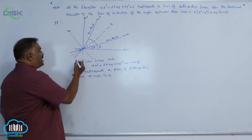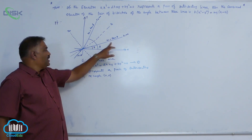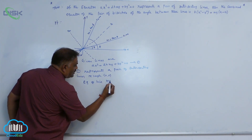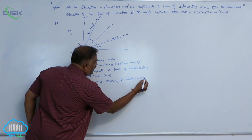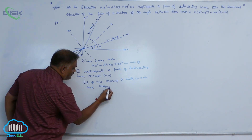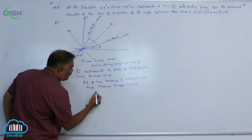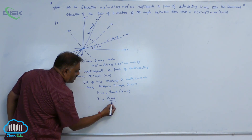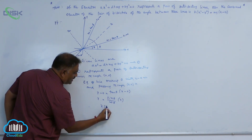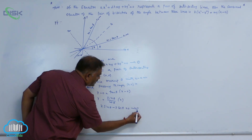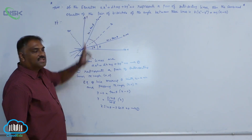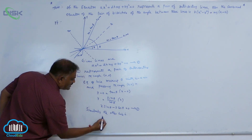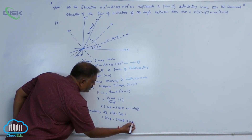You know the point (0, 0) and the slope tan θ, so the equation of the line making angle theta with the x-axis and passing through the origin is: y - 0 = tan θ · (x - 0), which gives y = (sin θ / cos θ) · x, so x sin θ - y cos θ = 0. Call it equation 1. Similarly, the other line is x sin φ - y cos φ = 0. Call it equation 2.